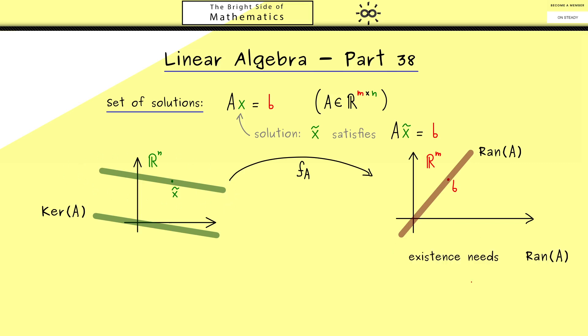At this point you can already remember two important facts for the solutions. On the one hand it is needed for the existence that b is an element in the range of A, because otherwise we cannot hit b at all. On the other hand, the uniqueness for a solution we can only have if the kernel is trivial, which means it is the smallest possible subspace, so just the zero vector.